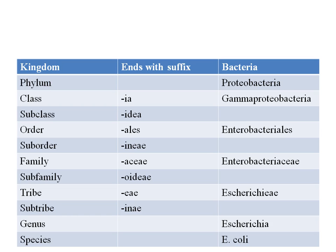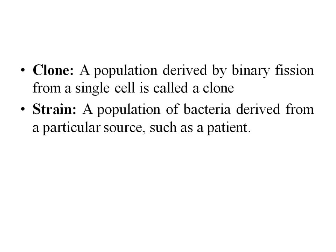There are two common terminologies used in microbiology, especially with respect to bacteriology: clone and strain. A clone is a population derived by binary fission of a single cell — that is, a clone of bacteria is derived from a single bacterium. A strain is a population of bacteria derived from a particular source, for example, a strain of Escherichia coli obtained from a patient sample. If you are growing an organism from a single bacterium, we call it a clone.